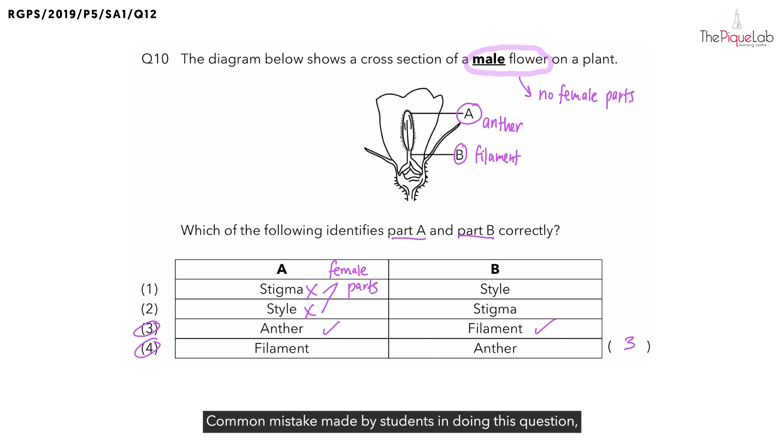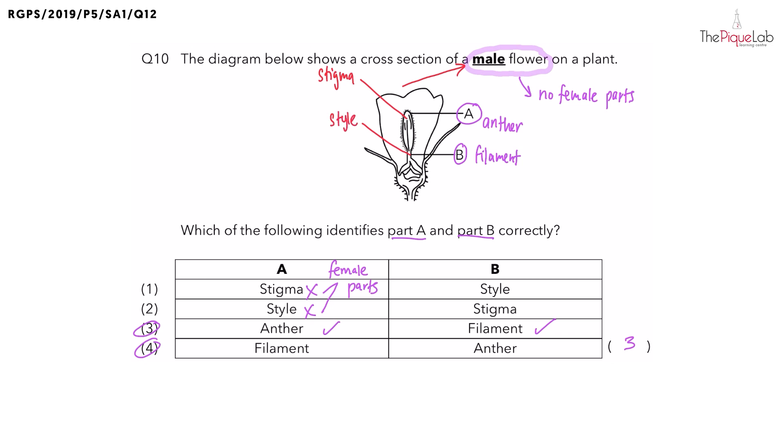Common mistake made by students in doing this question is if they miss this part that tells us that the flower is a male flower. Students immediately identify the large structure in the middle of the flower as a stigma and the structure that supports the stigma as a style. And we know these two structures, the stigma and the style, cannot be found in the male flower. Why is that so? Because these two structures are female parts and cannot be found in the male flower.